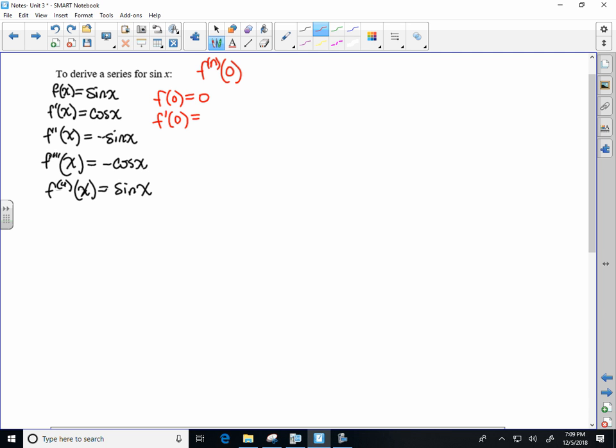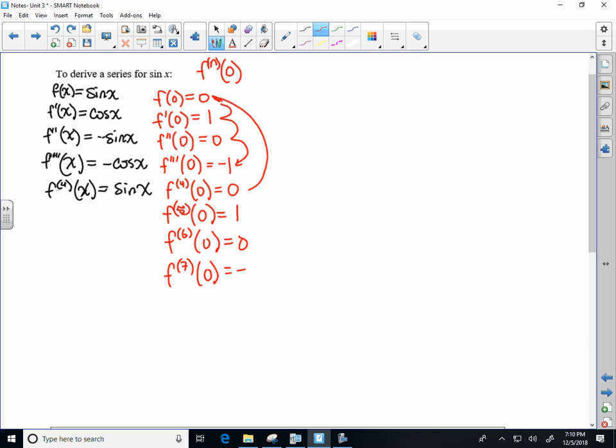So f of zero is zero. f prime of zero would be one. Double prime of zero is zero. Triple prime of zero is negative one. Fourth derivative at zero, zero. Let me go a couple more. I'm just repeating the pattern. So I got back to the start here. So then it's going down a step. So seventh derivative negative one and so on.